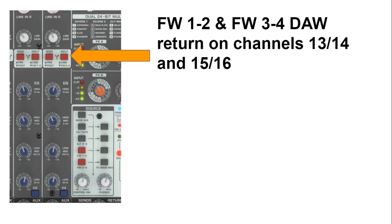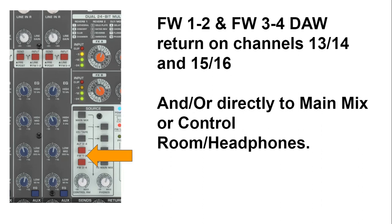We also have the option to use channels 13 and 14, 15 and 16 as our return audio from our digital audio workstation, by pressing the buttons labeled 'Line' or 'FW1&2' and 'FW3&4'. This feeds those two DAW channels directly to our main mix or into our control room and headphones, saving us two additional mixer channels. The trade-off is that if we feed them into dedicated channels, we get volume control via faders and EQ, whereas with direct selection, we don't have those options.